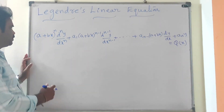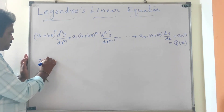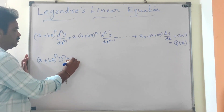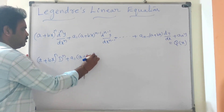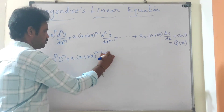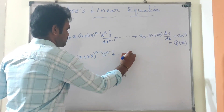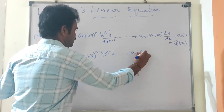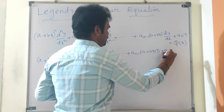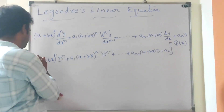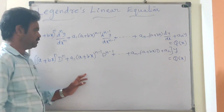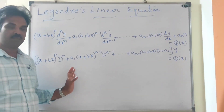Now write this equation in operator form. This becomes (a + bx)^n · D^n plus a₁(a + bx)^(n-1) · D^(n-1) plus and so on plus a_(n-1)(a + bx) · D plus a_n, all applied to y, equals Q(x). This is the operator form of Legendre's linear equation.